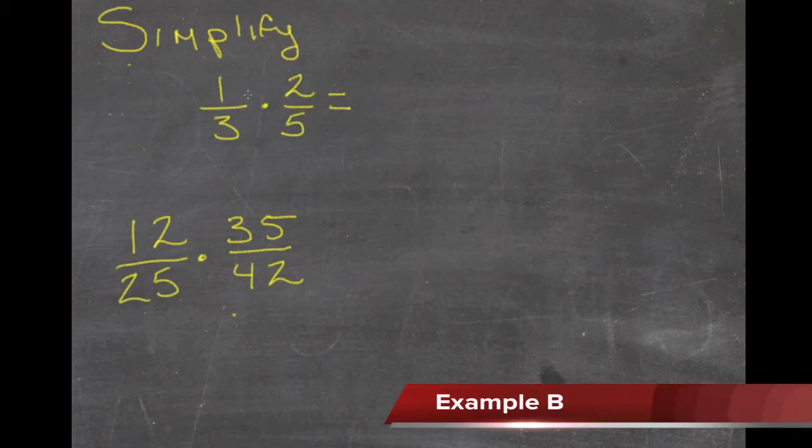So here we have 1/3 times 2/5. We just multiply 1 times 2, we get 2, and 3 times 5, and we get 15.